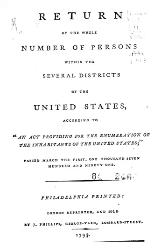Under the direction of the current Secretary of State Thomas Jefferson, marshals collected data from all thirteen states — Connecticut, Delaware, Georgia, Maryland, Massachusetts, New Hampshire, New Jersey, New York, North Carolina, Pennsylvania, Rhode Island, South Carolina, and Virginia — and from the Southwest Territory.